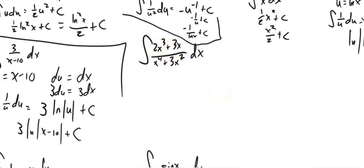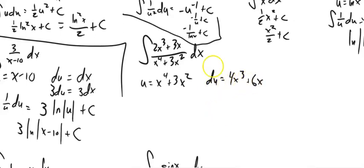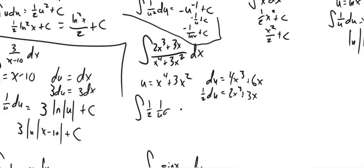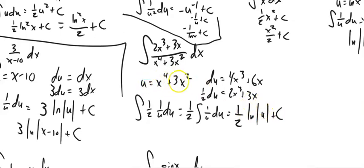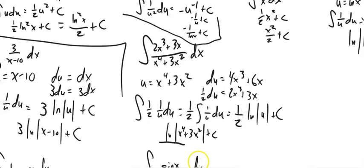This next one: same idea — let u equal the denominator. The derivative of u is 4x³ plus 6x. I notice the numerator is this times 2, so I write (1/2)du for the substitution. That gives one-half times the integral of 1/u du, and pushing the one-half out gives one-half times ln|u| plus C. Substituting back: one-half times ln|x⁴ plus 3x²| plus C.